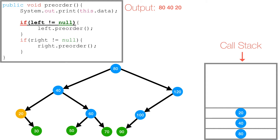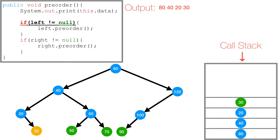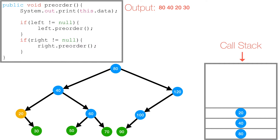Then again we check if 20's left is not equal to null. Well, 20's left is equal to null, so we can't execute that code block. We move on to the next if, and check if 20's right is not equal to null. Since it's not null, we call preorder on 20's right subtree. So 30 is pushed to the call stack, and we print 30. Then we check if 30's left is null — it is — and 30's right is also null. So we pop 30 off the call stack. We're back at 20, and since we've explored both subtrees of 20, it also gets popped off the call stack.